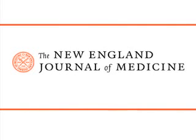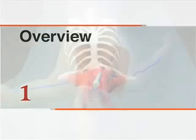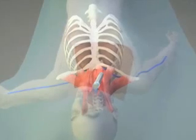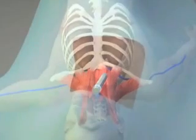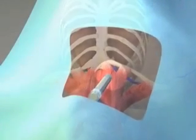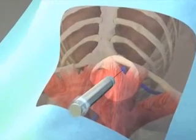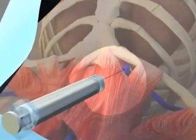This is a video in clinical medicine from the New England Journal of Medicine. The placement of a central venous line is an essential technique in the treatment of many hospitalized patients. This video will demonstrate the placement of a central venous catheter in the internal jugular vein using one of several variations of the Seldinger technique. An additional video on subclavian line placement will be forthcoming.